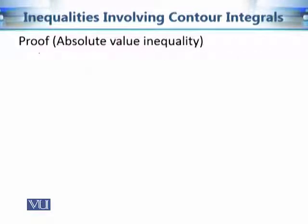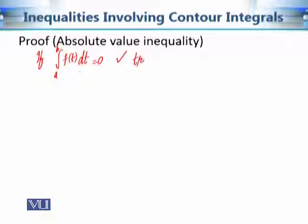Now let us begin the proof. First, if the value of the integral from a to b of f(t) dt is zero, then there is nothing to prove because both sides are zero and the inequality holds with equality. So this case is trivial. From now on we will assume that the integral is nonzero.